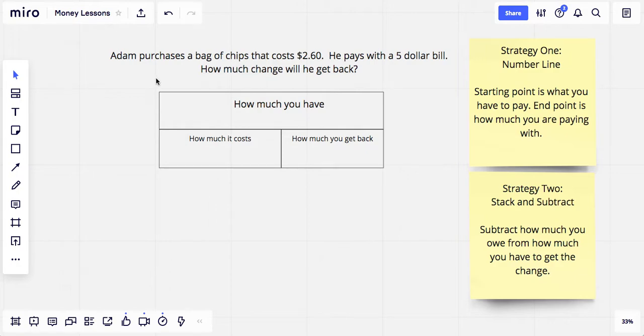So in our problem, Adam purchases a bag of chips that costs $2.60. He pays with a $5 bill. How much change will he get back? So we have a couple of new words here that we desperately need to understand in order to do our work. This word here, purchases, means to buy. Adam is going to give away $2.60 or trade it so that he can get a bag of chips.